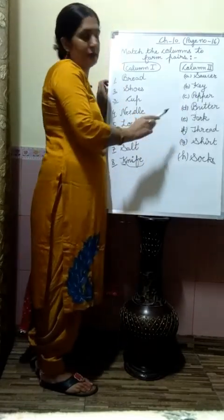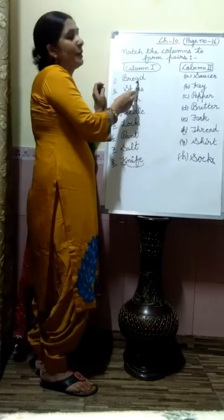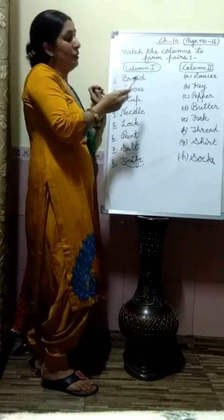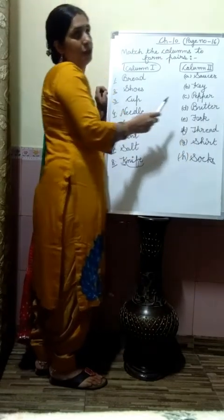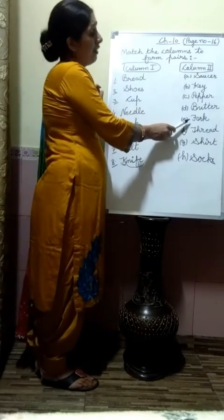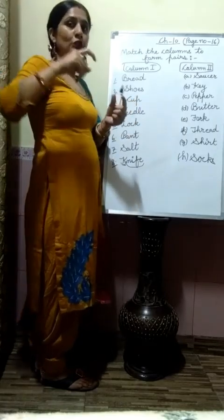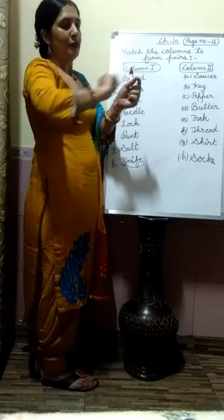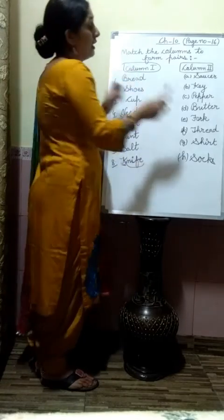Fourth is butter — B-U-T-T-E-R — butter. Butter is what we apply on bread — bread and butter. Fifth is fork — F-O-R-K — fork. Fork means kaanta. It looks similar to a spoon but has prongs. I will show you a picture of it.